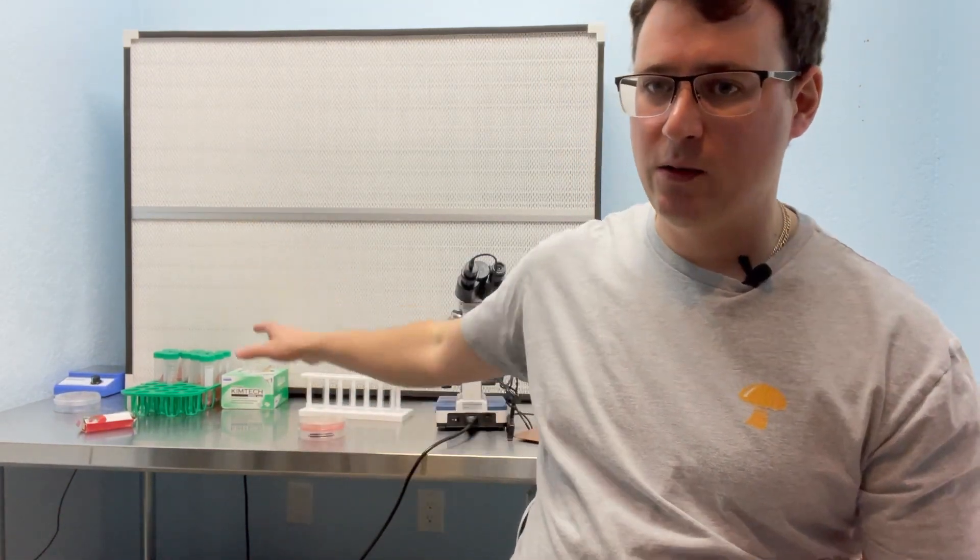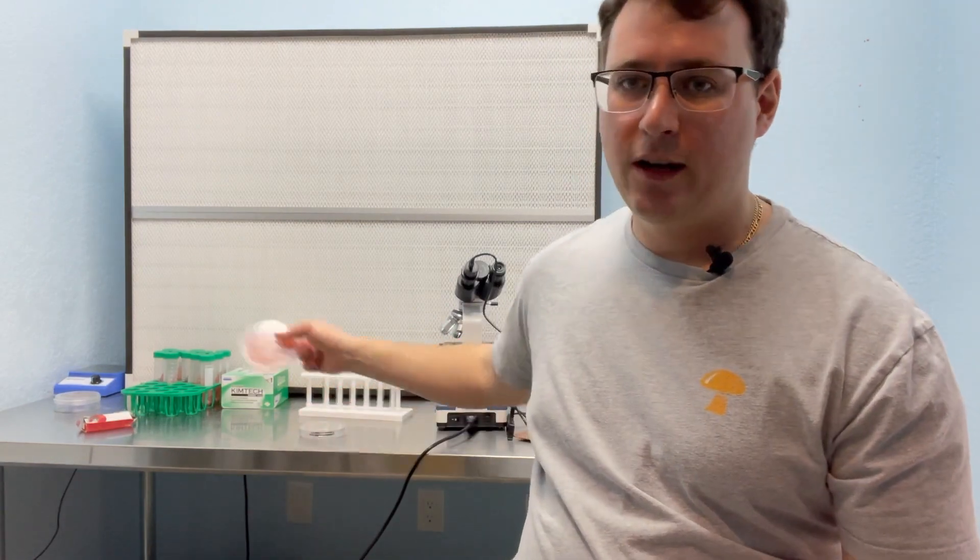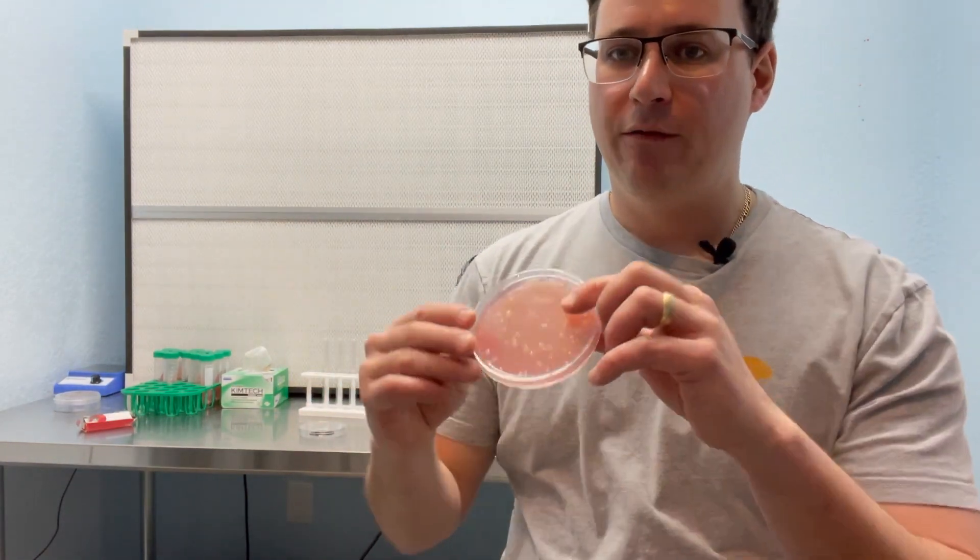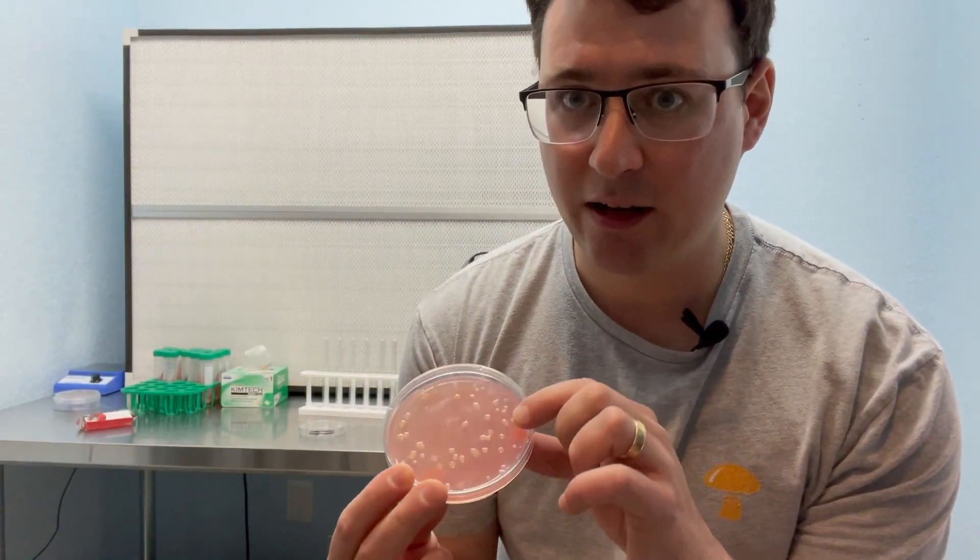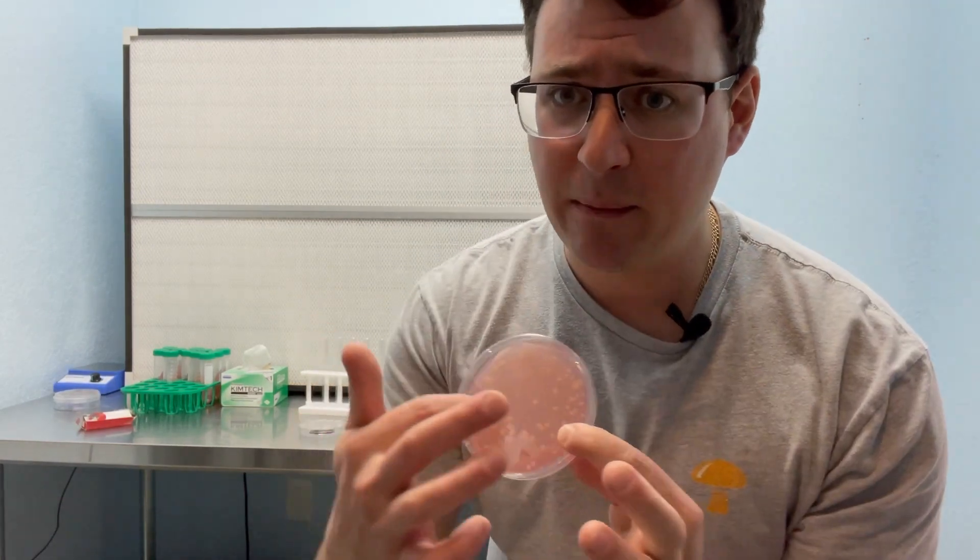If you're cloning mushrooms and you're cutting a piece of tissue onto a petri dish, that is one CFU. Or for example, on this dish which is contaminated with yeast, each one of these colonies started from a single CFU.